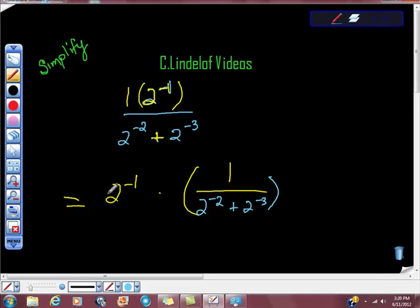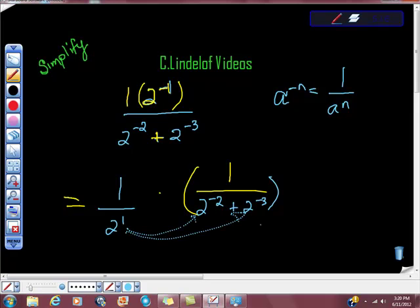And all I'm asking you to do is buy this with me. Remember that we have a to the negative n. What we really have is one over a to the positive n. We know that negative exponents cause fractions. Negative exponents do not cause negative numbers. So what I really have is one over two to the first power. Now all I'm going to do is distribute to here and to here.